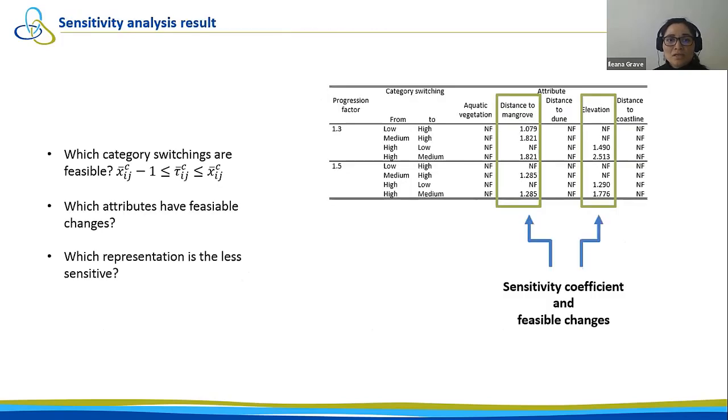We can see the results that given five attributes, two of them are the most sensitive: distance to mangrove and elevation. We can see also that if we compare the progression factor 1.3 and 1.5, we have more feasible changes for 1.3. So it seems that maybe Weber-Fechner 1.5 is a better representation in this case.